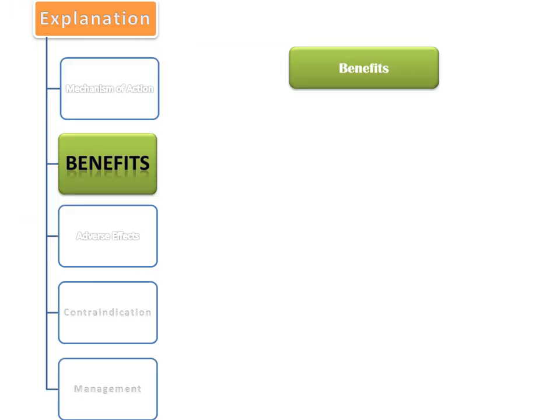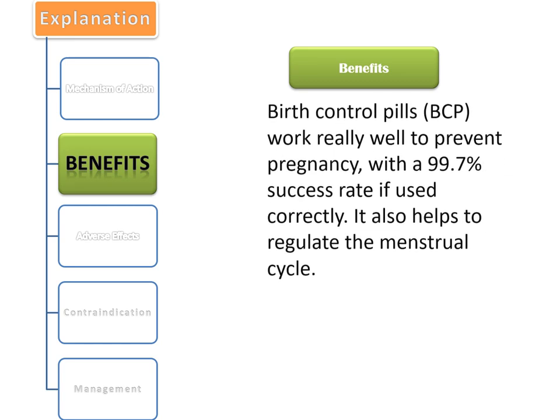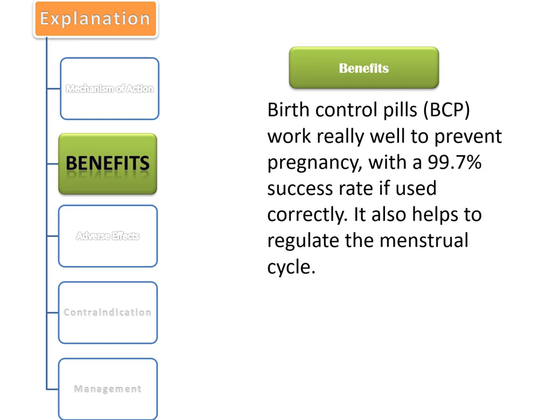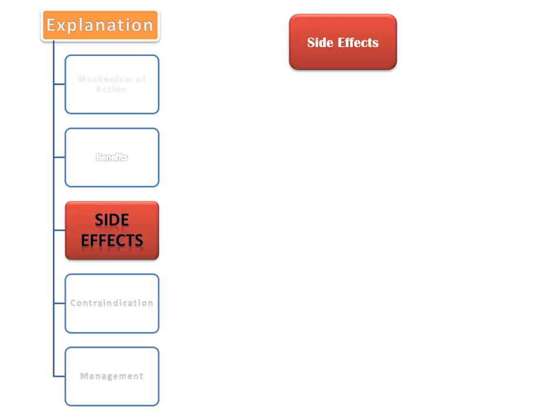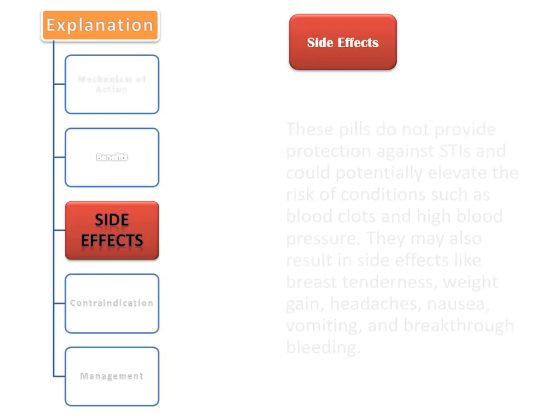Benefits can be explained like this: Birth control pills work really well to prevent pregnancy with a 99.7% success rate if used correctly. They also help to regulate the menstrual cycle.